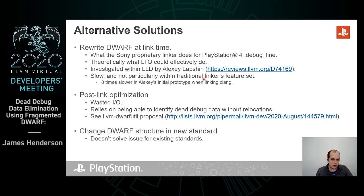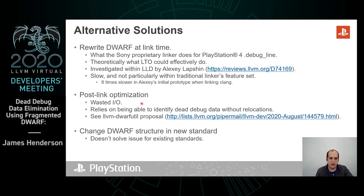The alternative solutions to this approach: we could completely rewrite the DWARF at link time. This is partially what the Sony linker did for the debug line section, and Alexey Lapshin has similarly investigated it within LLD. However, these approaches are slow — for example, Alexey's approach was eight times slower — and they're not particularly within LLD's or a general linker's feature set. We could do it post-link to remove that last issue, however it's still going to be slow and wastes I/O. We could also try changing the DWARF structure in a new standard, however this doesn't solve the issue for existing standards.